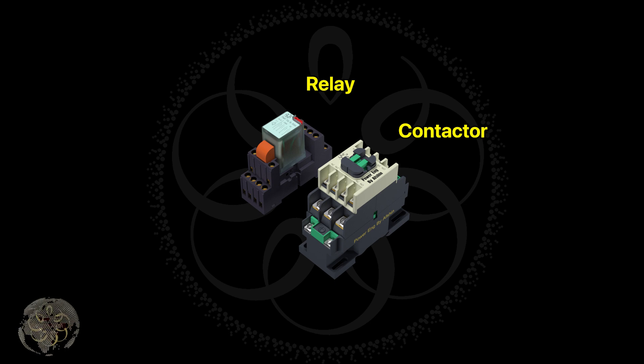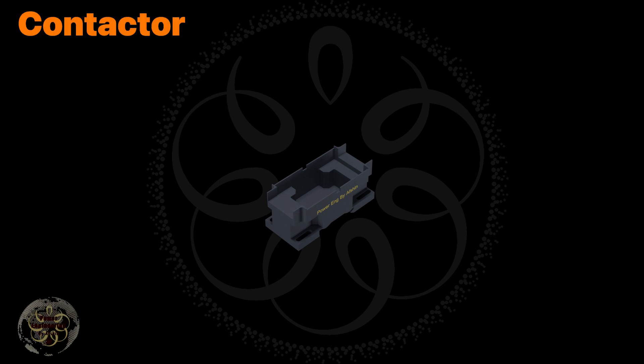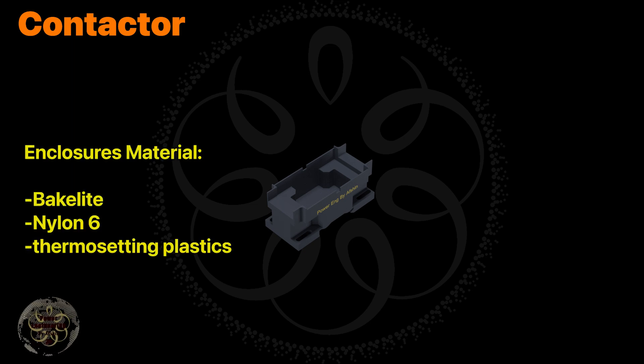Now let's take a closer look at the internal structure of a contactor. Here you can see part of the contactor's enclosure. The enclosure is a frame that houses the contacts and the electromagnet. Enclosures are made of insulating materials like bakelite, nylon 6, and thermosetting plastics to protect and insulate the contacts while also providing safety from accidental contact.